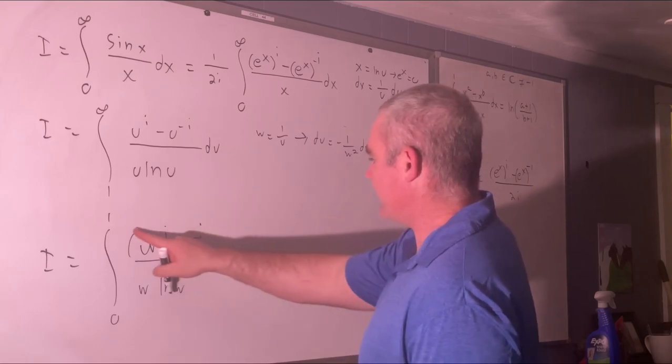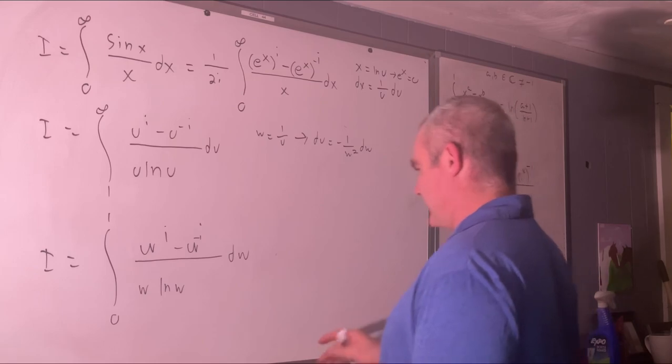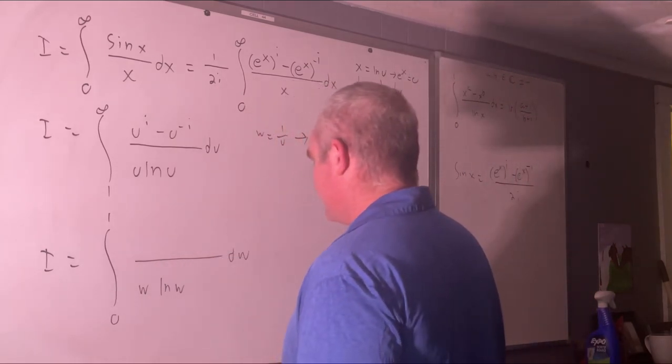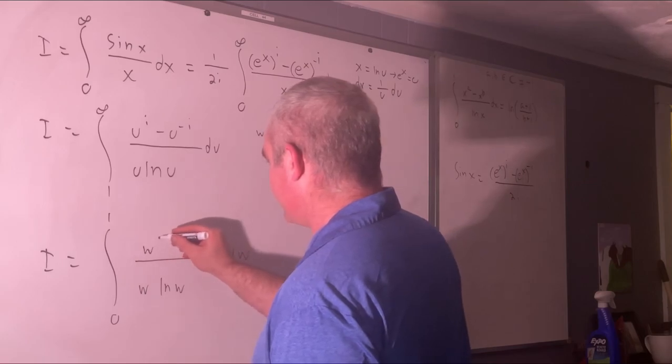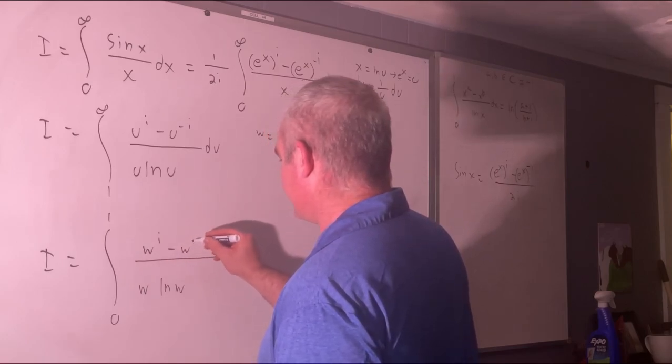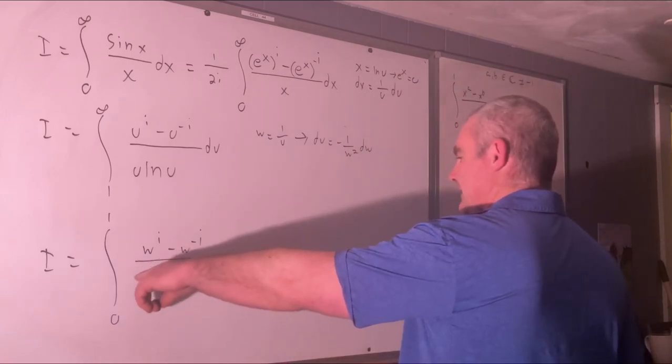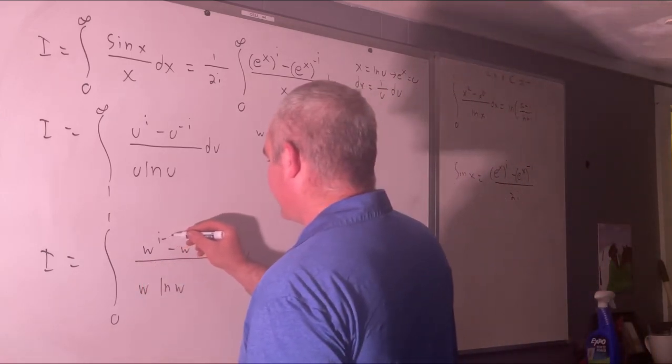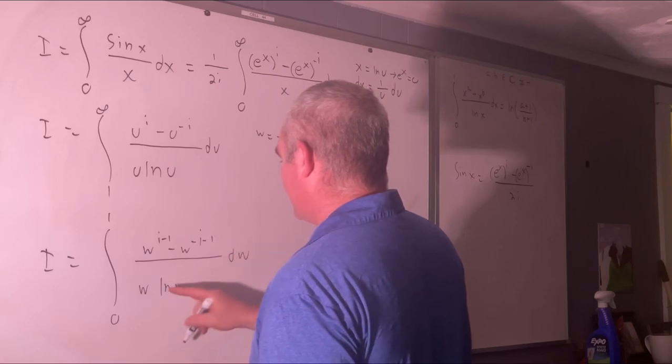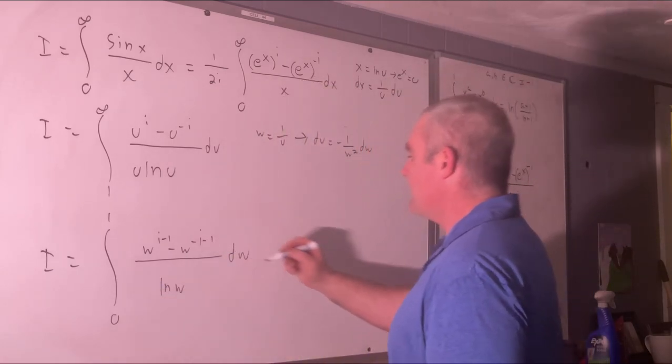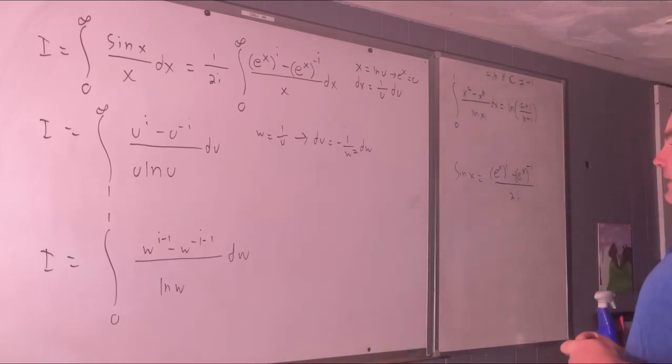Let's see. This is dw. Let's get rid of these parentheses and let me rewrite this a little bit more legibly. This is w to the i minus w to the negative i. Alright. Well, this is a w to the negative 1, so we'll just take 1 away from every one of those w's. And now we have it. Okay, now we have it.